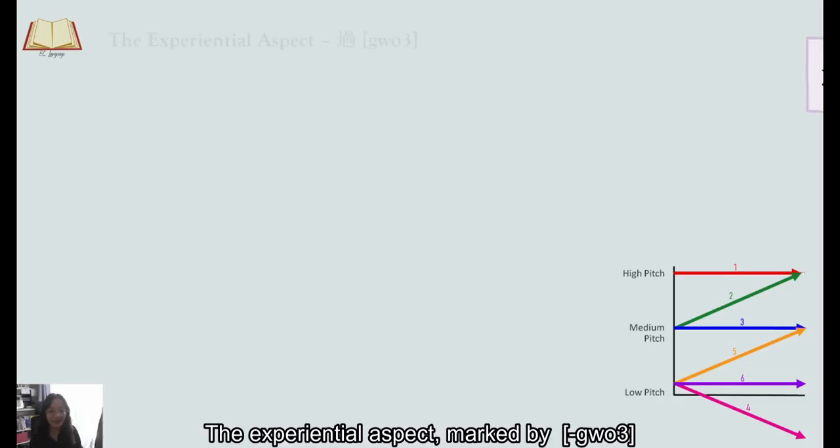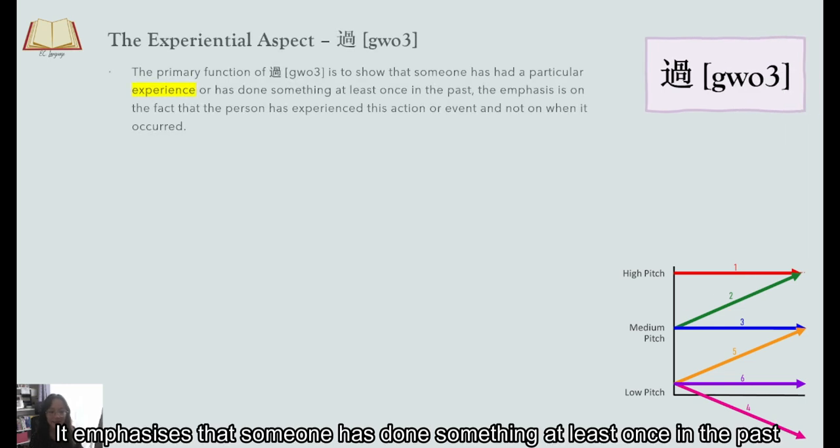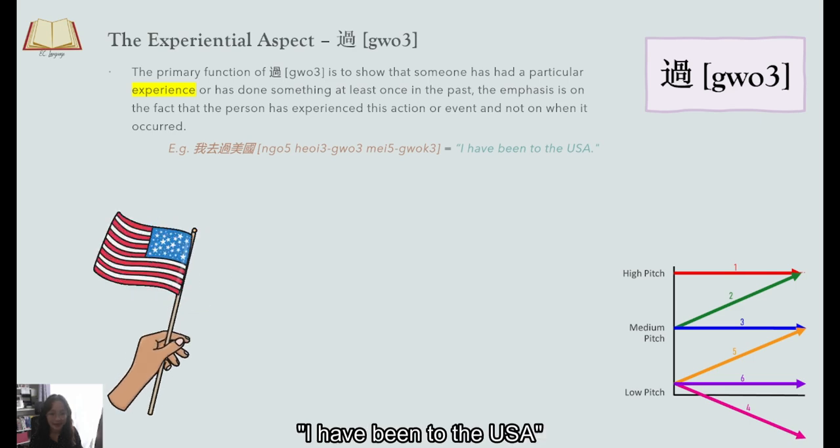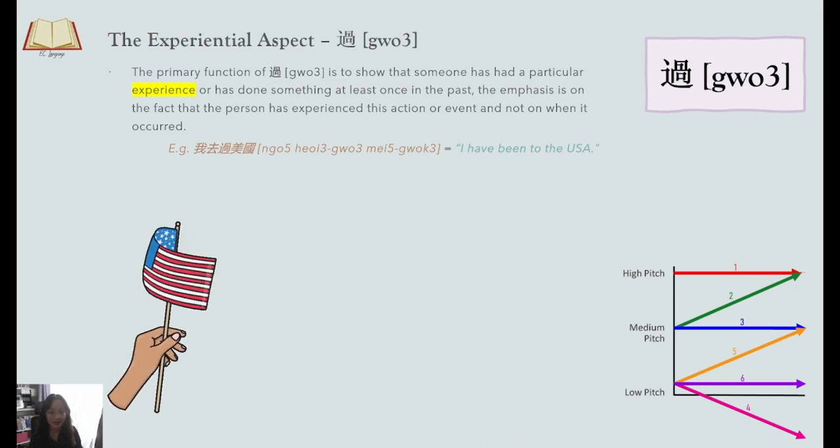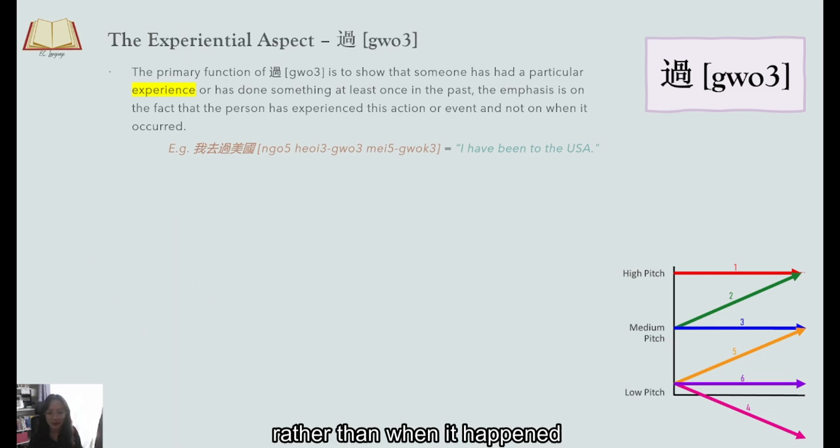The experiential aspect marked by 过 is all about experiences. It emphasizes that someone has done something at least once in the past. For example, 我去过美国 I have been to the USA emphasizing the experience of having been to the USA rather than when it happened or even the completion of the action.